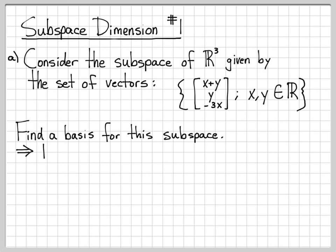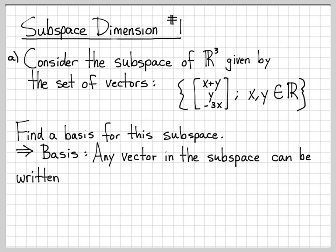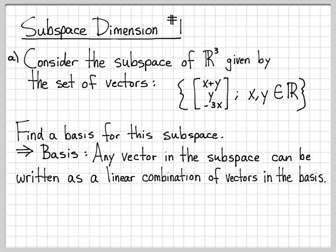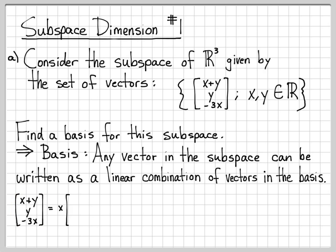So first of all, what do we mean by basis? A basis is a set of vectors that allows us to write any other vector in the space as a linear combination of those basis vectors. So if we can find a basis for this subspace, then any vector in the subspace can be written as a linear combination of the vectors in the basis. We need to find some fixed set of vectors such that we can write any vector of this form as a linear combination of them. Problems like this are actually pretty easy because we can factor out x and y very nicely.